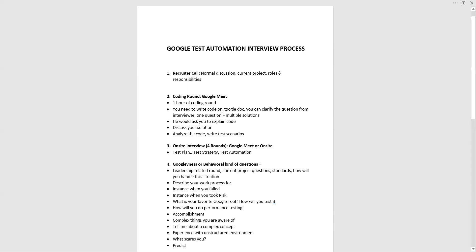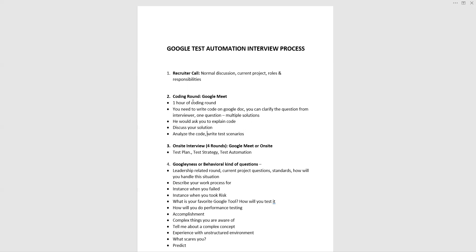If one question has multiple programming solutions, discuss the approach first before writing the code. The interviewer will also ask you to explain the code once it is done. If there are multiple solutions, they will ask how you can optimize the code and improve its performance. Being a test automation engineer, you won't be writing production code, but they expect you to analyze the code — for example, what would happen if you place a particular condition in a certain location. You'll also need to write test scenarios.